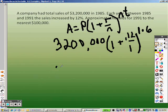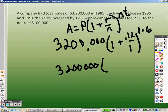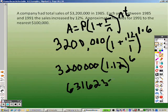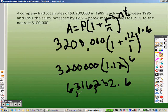So, it's 3,200,000. And that is 1.12 to the 6th power. So, 3,200,000 times 1.12 to the 6th power equals, you end up getting 6,316,232.6. So, to the nearest 100,000th. So, to the nearest 100,000th would be 6,300,000 would be your answer.